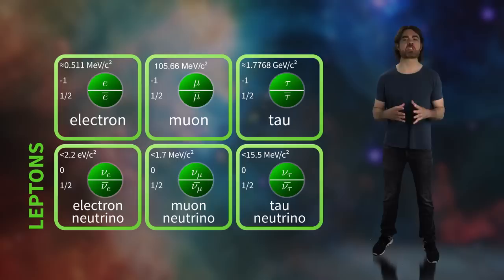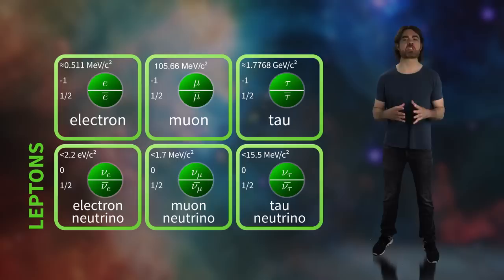However, chirality is fundamental to the particle and doesn't depend on your own velocity. This is where we need to expand our picture of the particles of the standard model a little, and open up the possibility of the sterile neutrino's existence. There are actually two versions of each fermion, one with right-handed chirality and one with left,